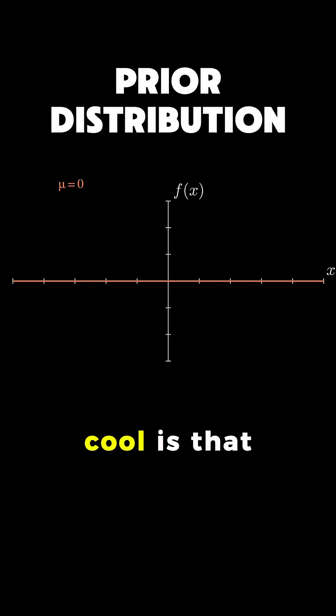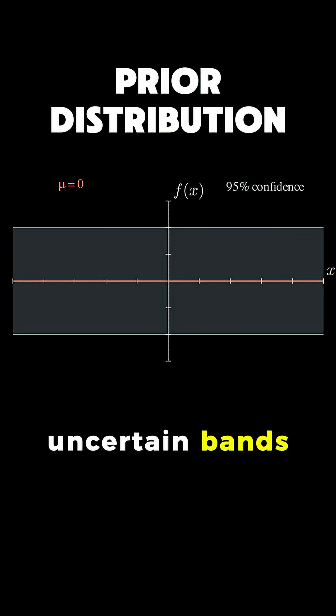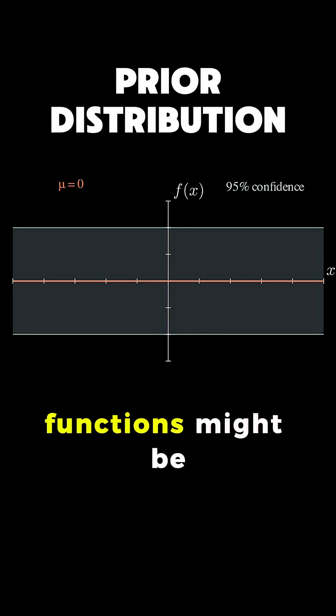But what's really cool is that we also get these blue uncertain bands showing us plus or minus 2 sigma around our prediction, which gives us a 95% confidence region for where our functions might be.